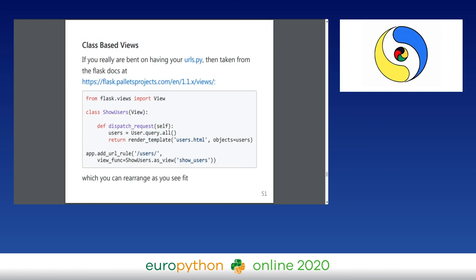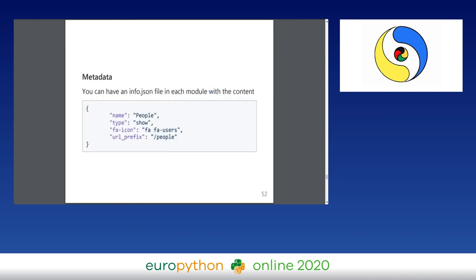If you really want urls.py, Flask specifically implements class-based views for users who want Django-like behavior. Here is a simple snippet taken directly from the Flask docs showing how you can do it.